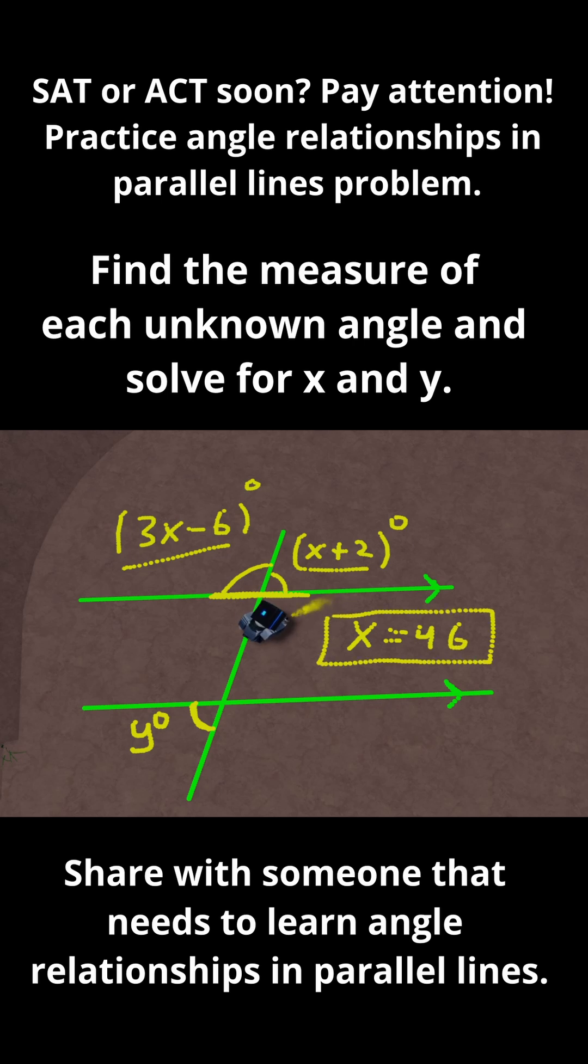So now what I can do is I can find these two measurements here. So x plus 2, that's very easy. 46 plus 2 is just 48. And then to find what 3x minus 6 is equal to, I could plug in 46 into that equation and see what it is, but I can also do something easier.